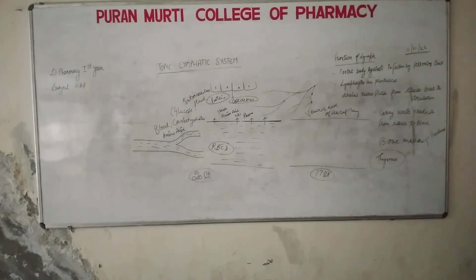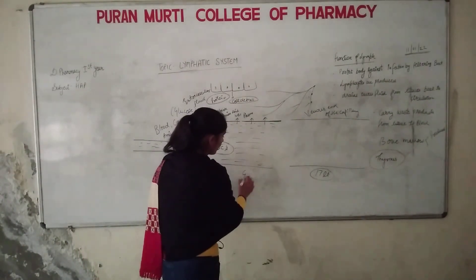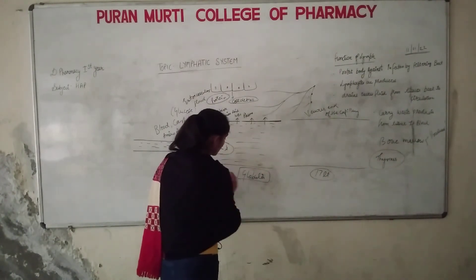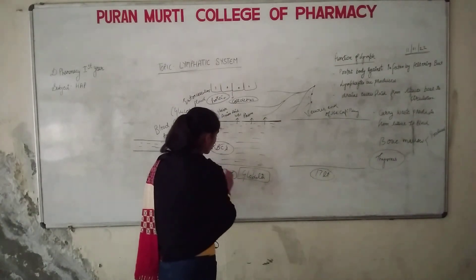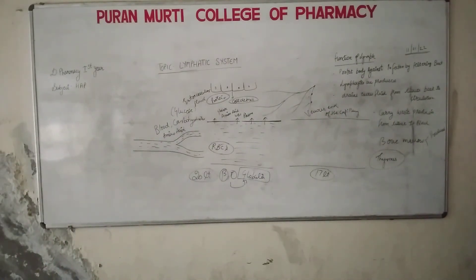The functions of lymph nodes: they filter out solid particles such as bacteria present in lymph; they produce lymphocytes; and when lymphocytes are destroyed, a protein called globulin is formed. When B lymphocytes and T lymphocytes are destroyed, they produce the protein globulin.